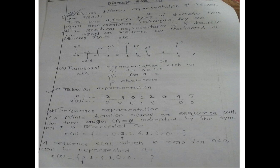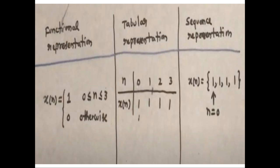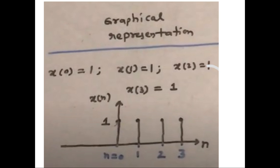We are going to represent question number 4. We will show the graphical representation. We will represent x of 0, x of 1, x of 2, x of 3. We will represent the graph — x(0) is 1, x(1) is 1, and x(2) is 1. This is the graphical representation.